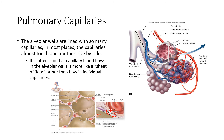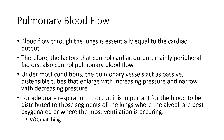Our lungs are fantastic organs designed to exchange gas. Pulmonary blood flow through the lungs is essentially equal to cardiac output. Unlike what we have in the periphery with local vasoconstriction and dilation, we don't really have that in the pulmonary vasculature. They're more or less passive, distensible tubes that are subject to changes in cardiac output from the right ventricle.